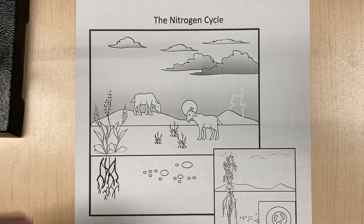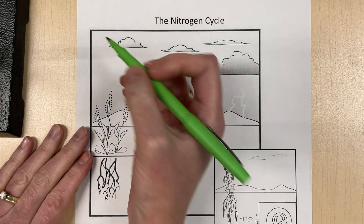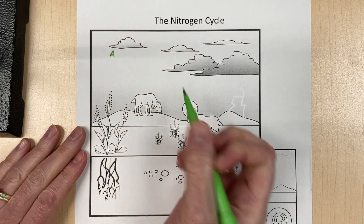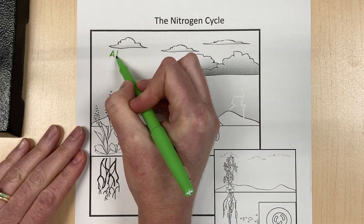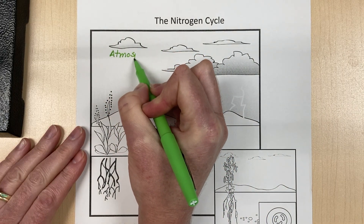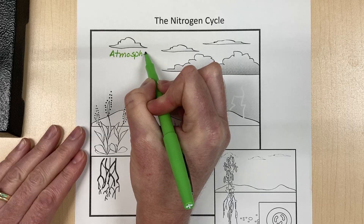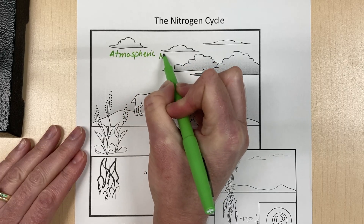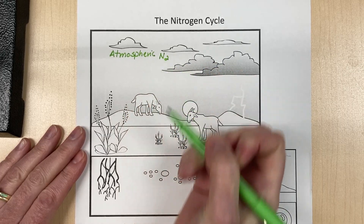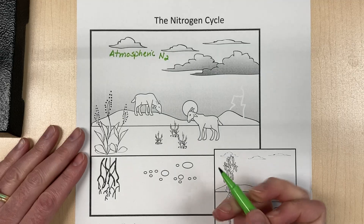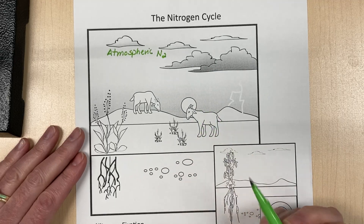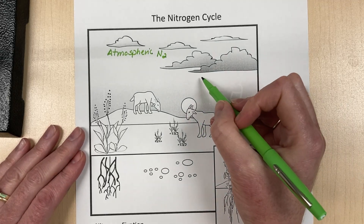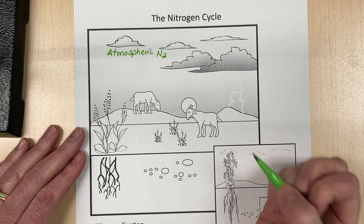Let's start with atmospheric nitrogen. The largest reservoir of nitrogen is in the atmosphere. So atmospheric nitrogen — how it gets to Earth is through nitrogen fixation from that N2.